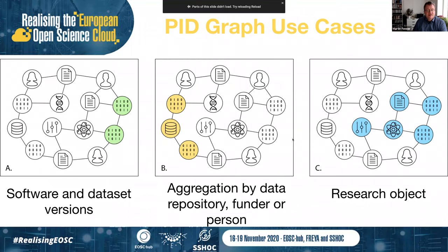The PID graph is first of all a concept, but it can then be explored and enables us to address unique questions that until now were kind of difficult to address at scale. Something that we did in the Freya project as a general approach is, before building anything, really make clear what is it that people need — identify use cases, user stories, talk to the community. This is a subset of things we identified at the beginning of Freya three years ago that are really helpful but hard to do right now.